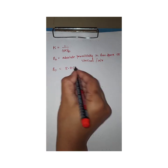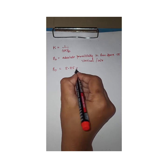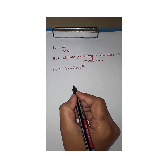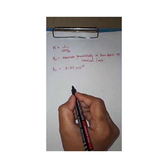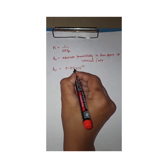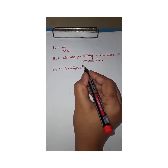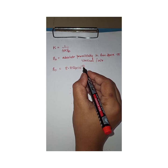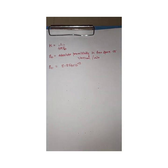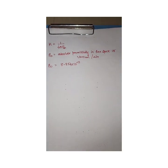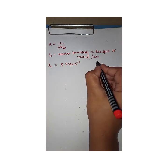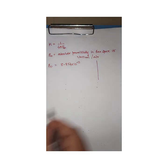The value of absolute permittivity ε₀ is 8.85 × 10⁻¹² (sometimes taken as 8.854 × 10⁻¹²). This permittivity has a unit, which we will derive.